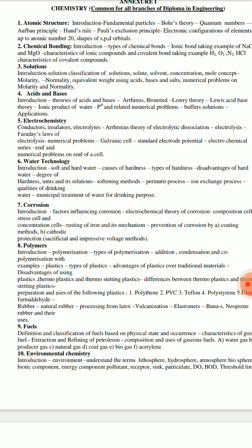For acids and bases, there are three theories: Arrhenius, Bronsted, and Lewis acid-base theory. After these three theories, you can use the ionic product of water, pH-related numerical sums, and applications of buffer solutions.